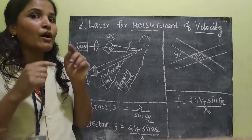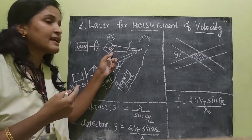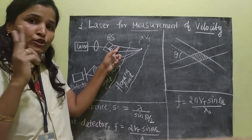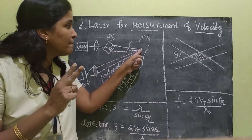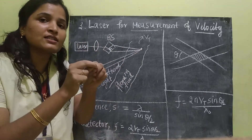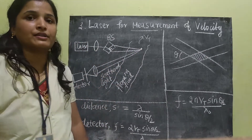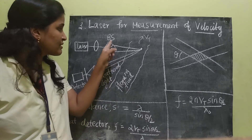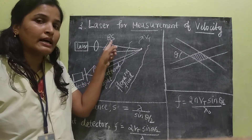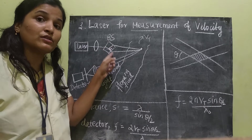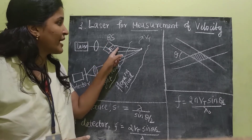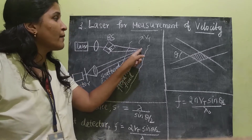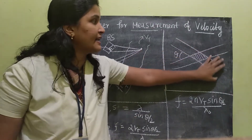By using some lenses, the output of the beam splitter — the two beams — will be made to focus on the same point. That is very important: because of the lenses, the two laser beams are made to focus on the same point.